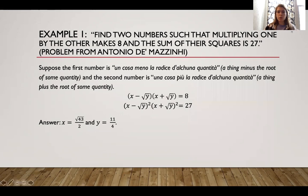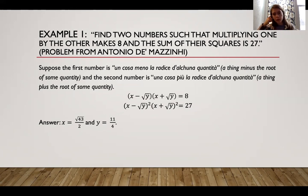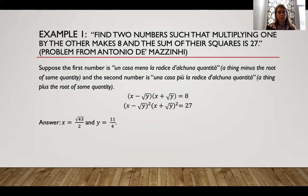An example: find two numbers such that multiplying one by the other makes 8 and the sum of their squares is 27. They would suppose the first number is a thing minus the root of some quantity, and the second number is a thing plus the root of some quantity — you can see the Italian words lining up. In our notation, that is (x − √y)(x + √y) = 8 and (x − √y)² + (x + √y)² = 27. Solving that system algebraically gives x = √(43/2) and y = 11/4. That was a useful approach taught in schools for solving trading problems.